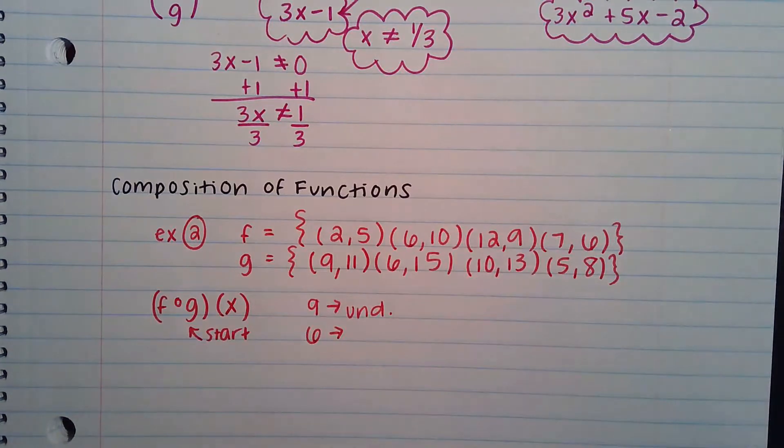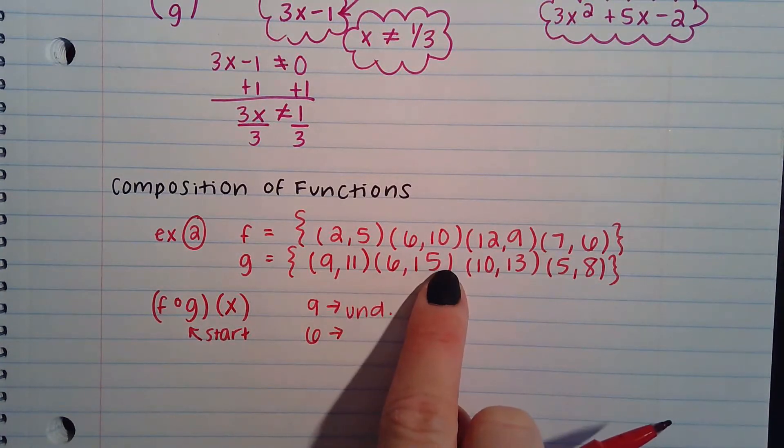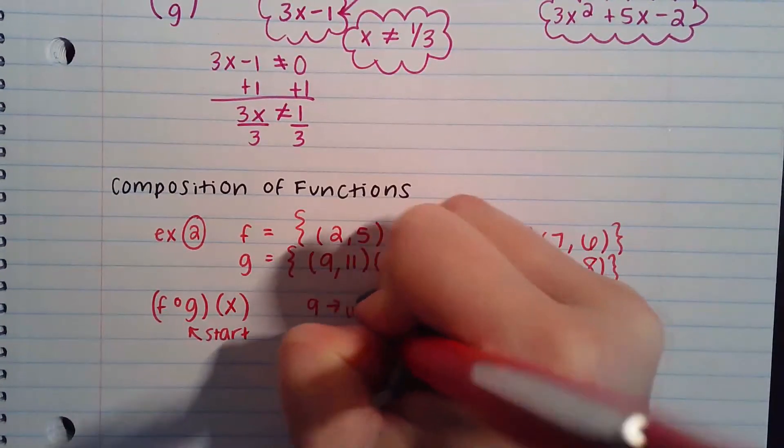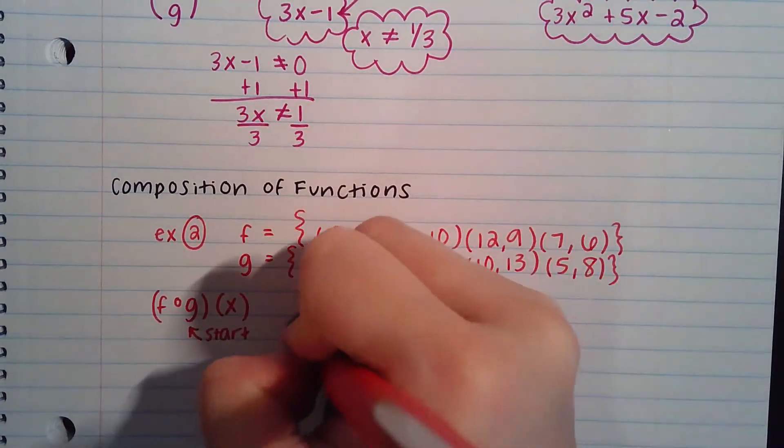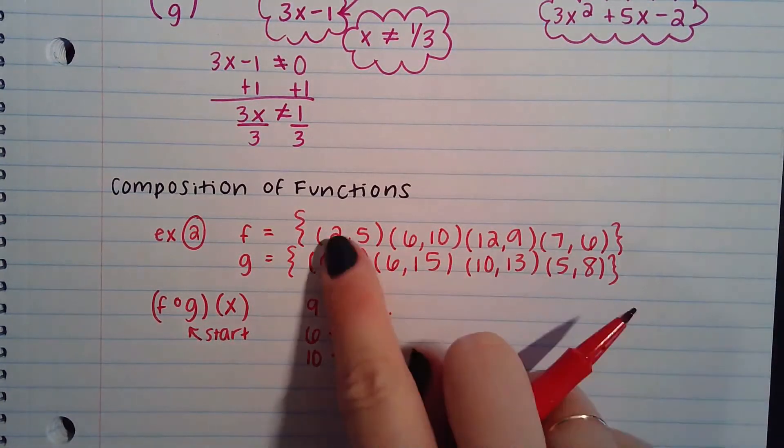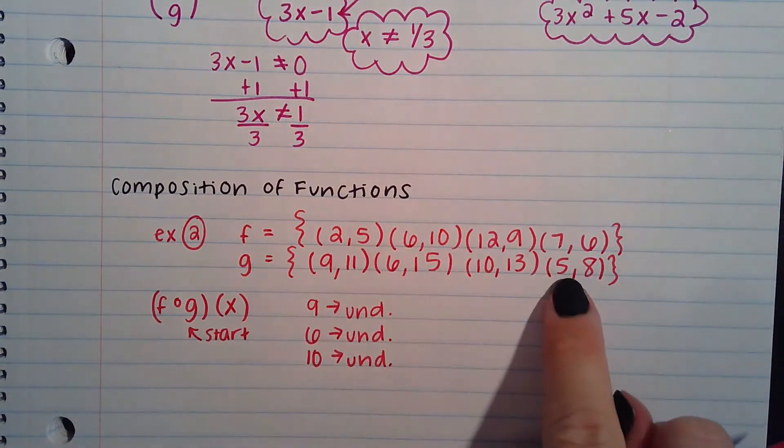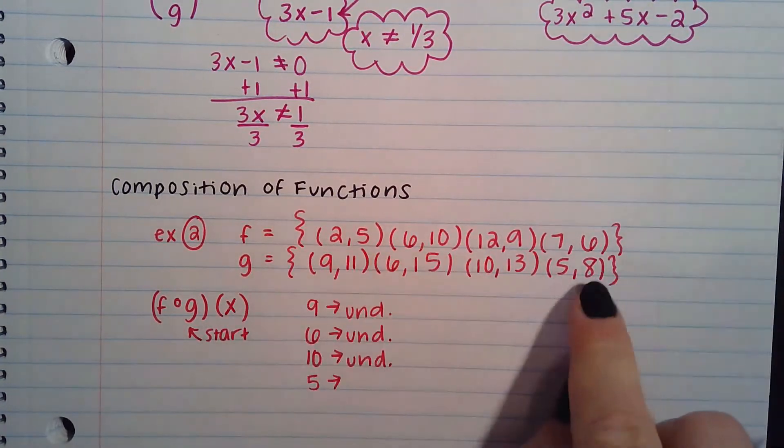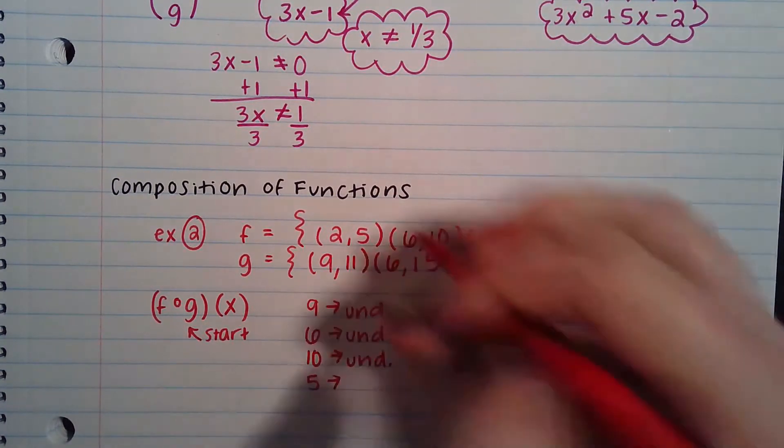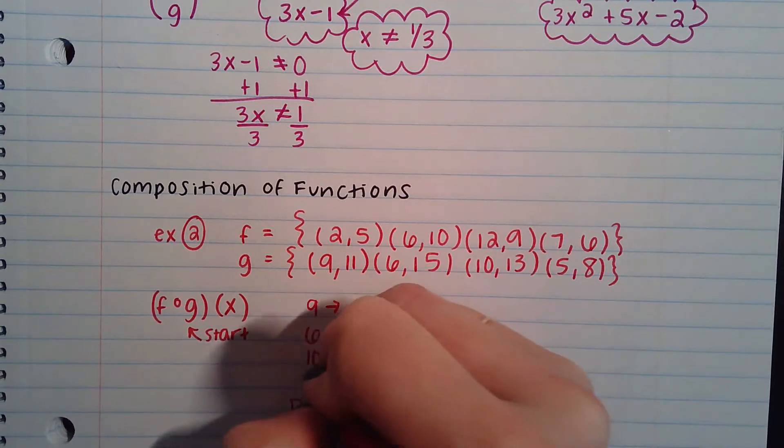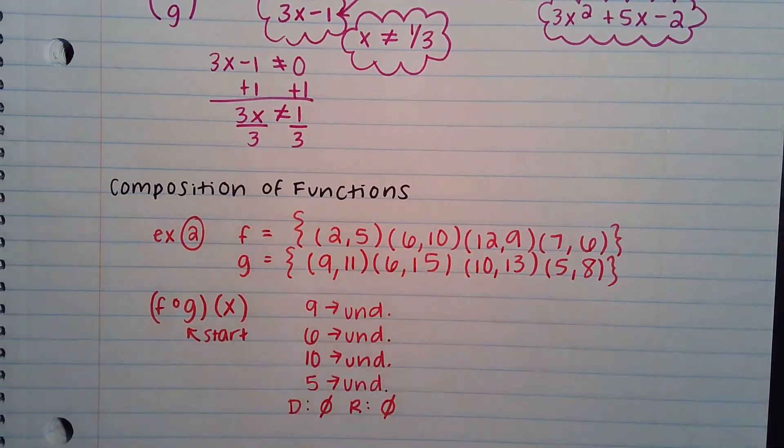Same thing for 6. Start at 6. Move here. See if that's one of your x values. It's not. So undefined. Next one is 10. Move to 13. Undefined. Last one, 5. Moves to 8. Undefined. Because it's undefined everywhere, the domain would be undefined and the range would be undefined, which we can denote with those little symbols that looks like a zero crossed out. Just letting you know there's nothing in that solution set.